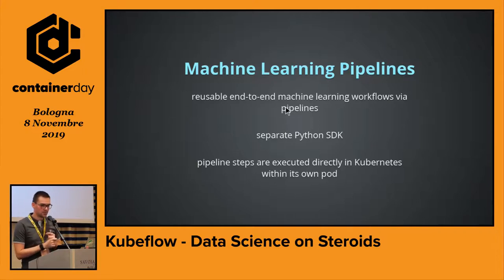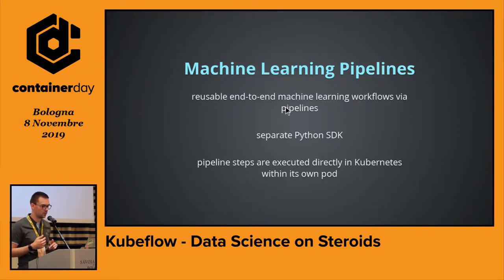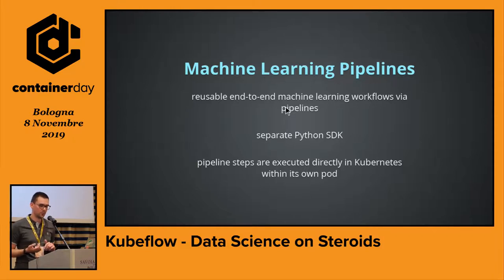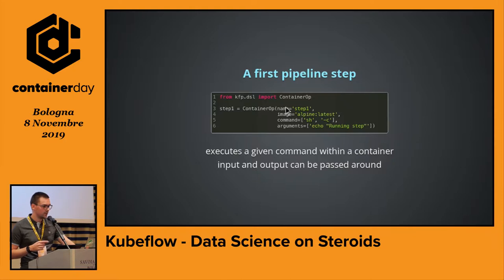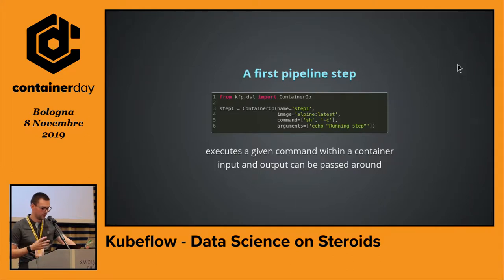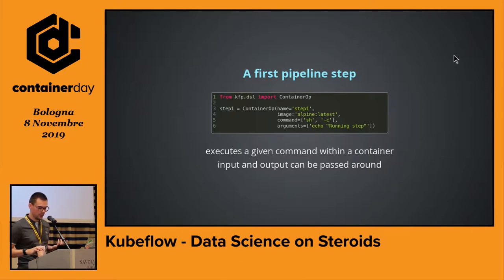Kubeflow also provides reusable end-to-end machine learning workflows via pipelines. This feature comes with a complete Python SDK, so data scientists can use it without learning a new language since they likely already know Python. Every pipeline step is executed directly in Kubernetes within its own pod, and inputs and outputs for each step can be passed around. A pipeline step looks like this: we import the Kubeflow Pipeline SDK (KFP) and specify a step — a container op — which has a name, an image, a command, and some arguments to run. That command and arguments are executed when the step runs.